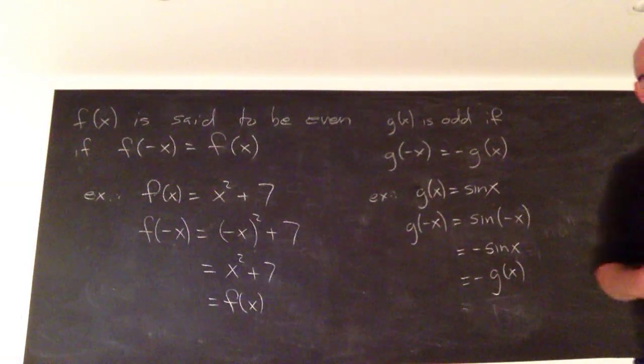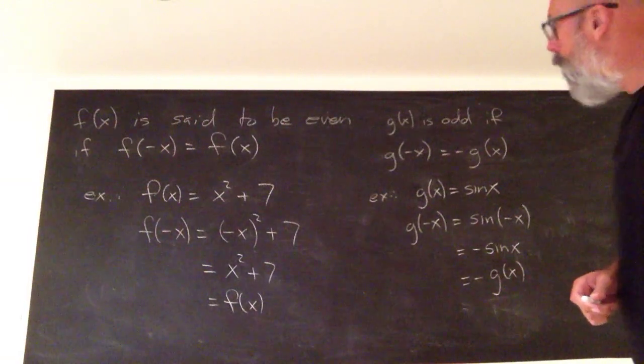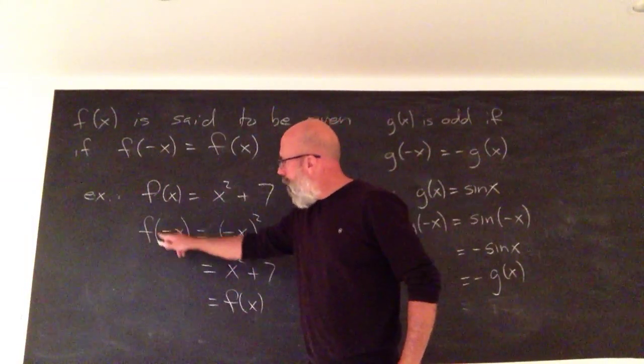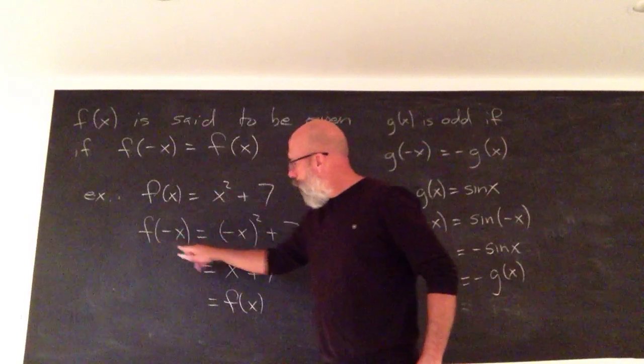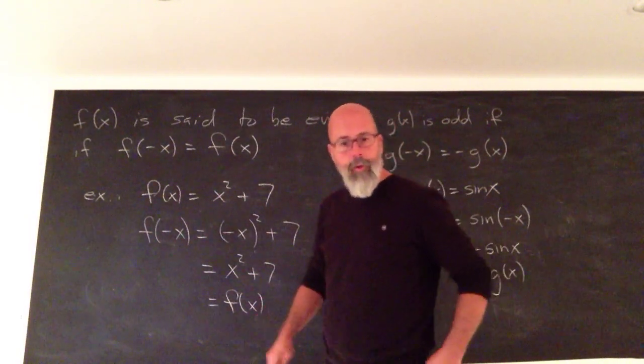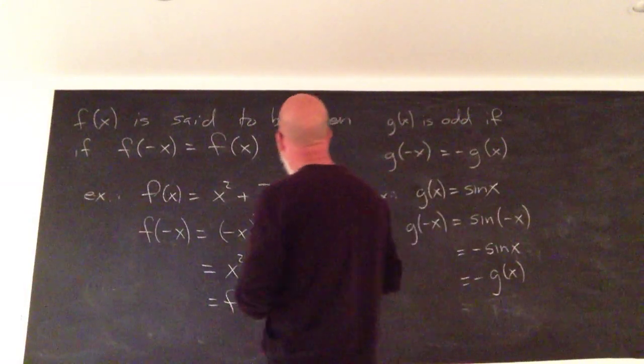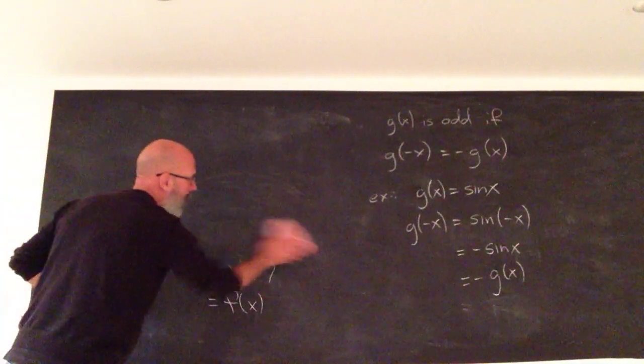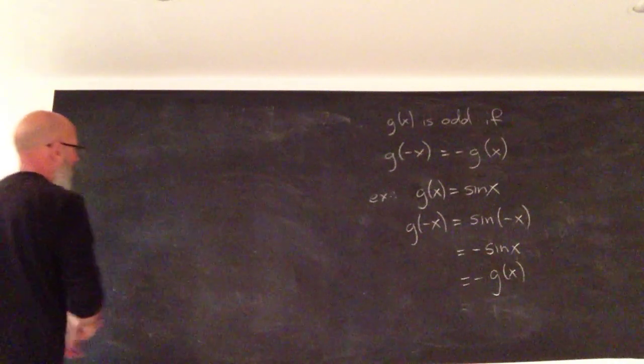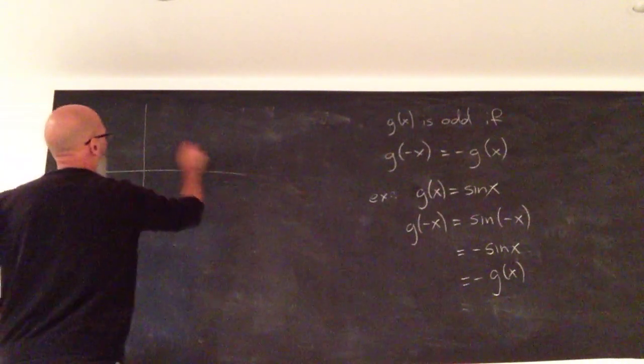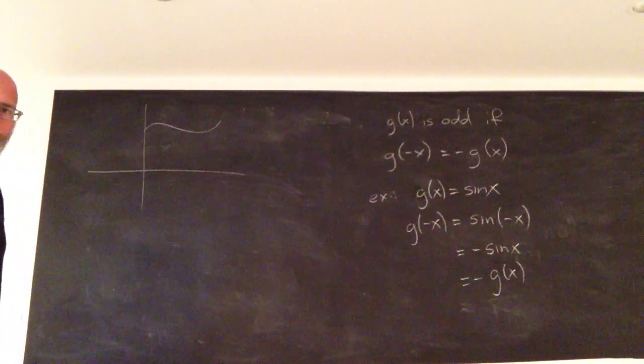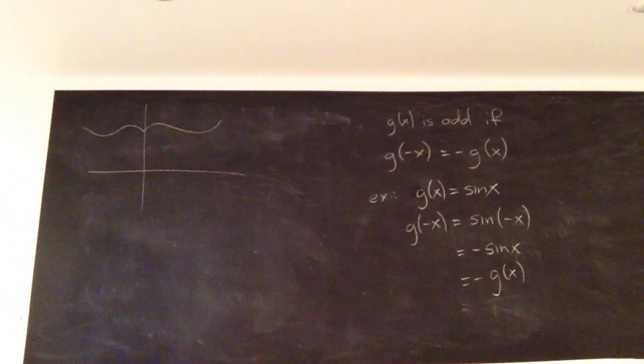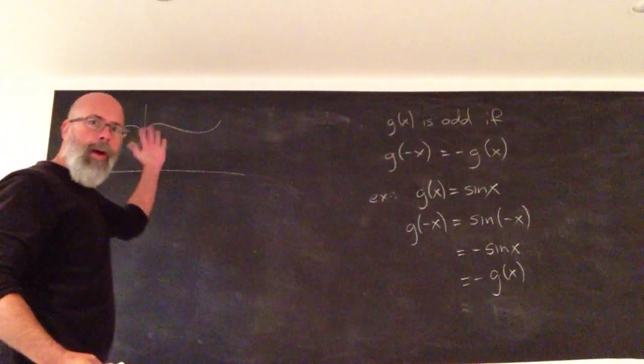What are the implications as far as the graph is concerned? Well, here we're saying that if you plug in a negative value, the function is the same as if you plugged in its positive value. So you have this symmetry about the y-axis. Whatever happens on one side of the y-axis, the same thing happens on the other. So you have this symmetry about the y-axis.